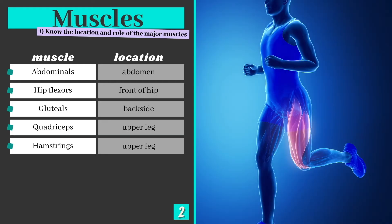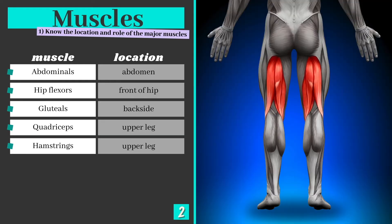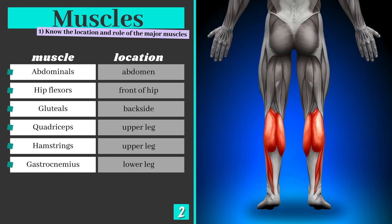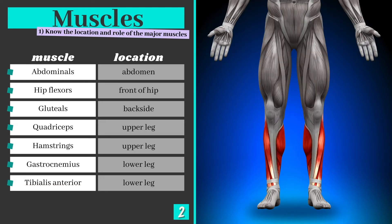The quadriceps sit at the front with the hamstrings at the back. The gastrocnemius is the largest of the calf muscles. It works alongside the tibialis anterior, which is located at the front of the leg beside the tibia or shin bone.